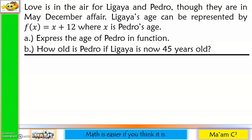Love is in the air for Ligaya and Pedro, though they are in a May-December affair. Ligaya's age can be represented by f(x) equals x plus 12, where x is Pedro's age. Letter A: express the age of Pedro as a function. What we are given is the function for the age of Ligaya, and in letter A we are asked to determine the function for the age of Pedro — meaning we have to determine the inverse of f(x).